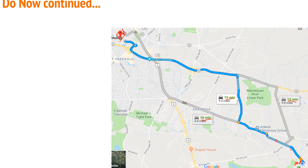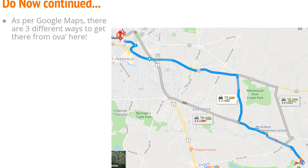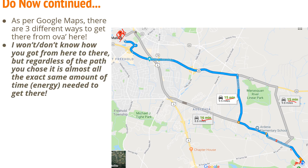Even though you are taking different roads and different ways to get there, it's all going to take about the same amount of energy or the same amount of time. Google takes data from other cars and other people who have used Google Maps and calculates the average amount of time it takes for each segment, then adds up that total. That's how you get your total of 15 minutes.